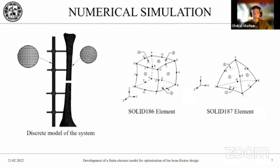For the numerical simulation of the stress-strain state of the bone–exfix device system by the finite element method, the ANSYS Workbench software complex was used. At the preprocessing stage, we first import our models into the ANSYS Workbench environment. Second, we set the properties of the materials — in our case, medical steel and cortical bone. Third, we create a finite element mesh, dividing our object into a number of elements forming a discrete model, for which we set boundary conditions. After discretization, the models consist of SOLID186 and SOLID187 elements.